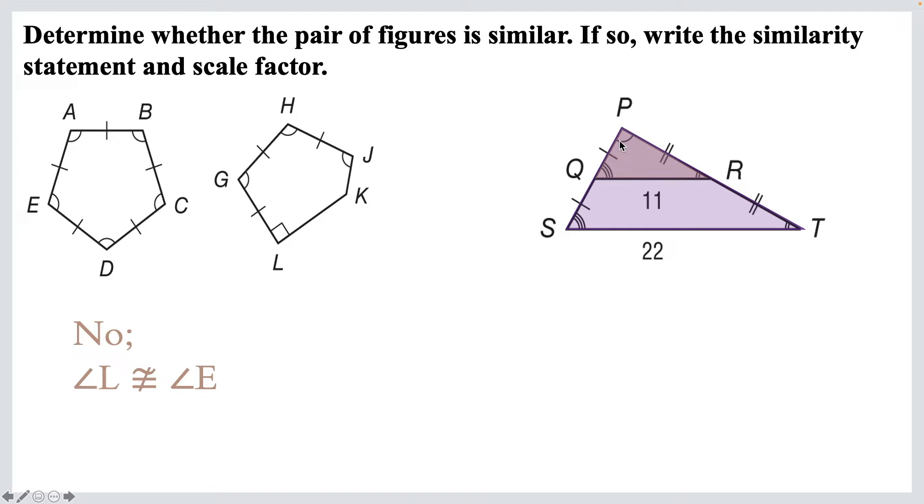Now, what about corresponding sides? So the little guy, PQ, that matches with PS. And PQ is half of QS, because those are congruent parts. Same thing with this long side here. PR is half of RT. And the bottom, you can see, 11 is half of 22. So we can say then, that triangle PQR is similar to triangle PST, and the scale factor is 1 over 2. We could also flip that. If we want to have the bigger one first, we could have triangle PST is similar to triangle PQR, in which case, since we're talking about the big one first, the scale factor would be 2 over 1.